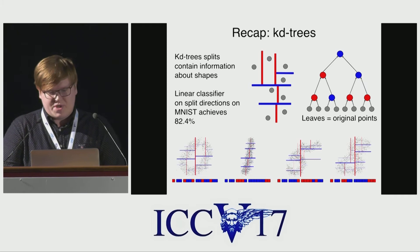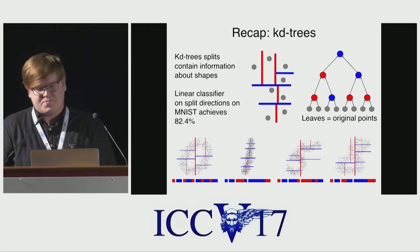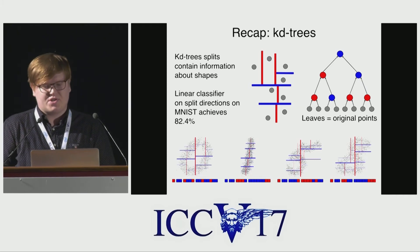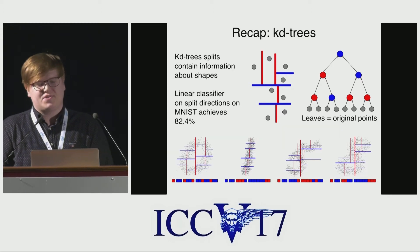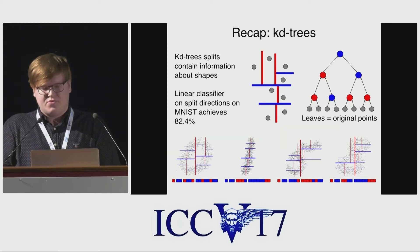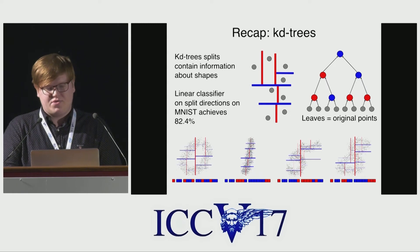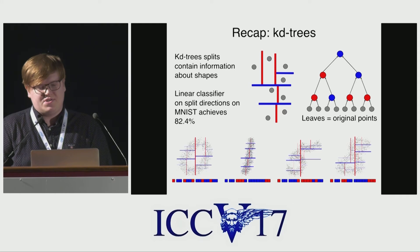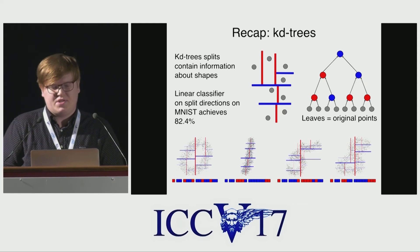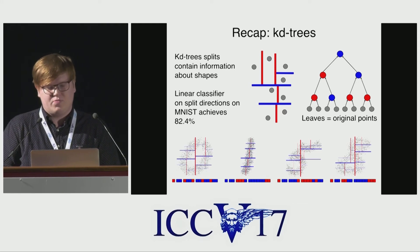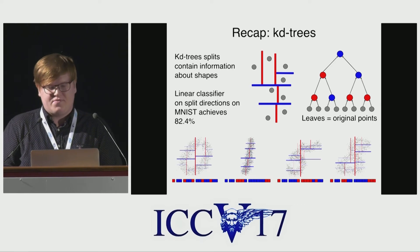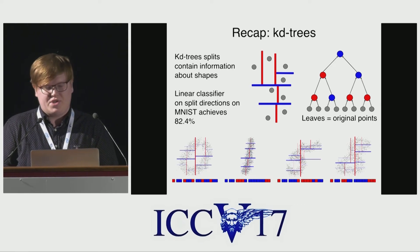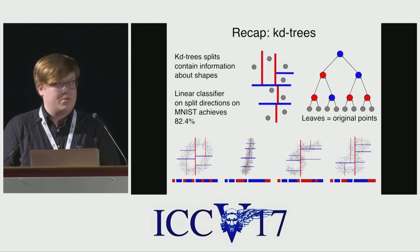Just to remind everyone, KD trees are binary spatial partition trees which are constructed recursively by splitting the data at the median of an axis with the biggest value range. They naturally impose a hierarchical structure on point clouds. One of our surprising findings was that this structure contains information about shapes valuable for recognition tasks. Moreover, this information can be used to define weight-sharing mechanisms within a neural network.